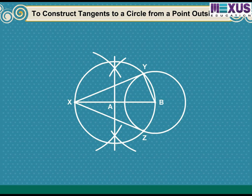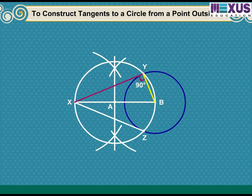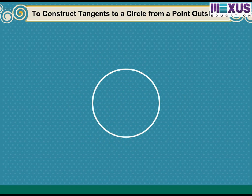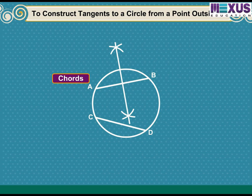Let us see how this construction works. Join BY. Angle XYB is an angle in a semicircle, therefore angle XYB = 90°, meaning XY is perpendicular to BY. Since BY is a radius of the given circle, XY must be a tangent to the circle. Similarly, XZ is also a tangent. If the center of the circle is not given, locate it first by finding the intersection of perpendicular bisectors of any two non-parallel chords, then proceed as above.